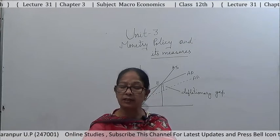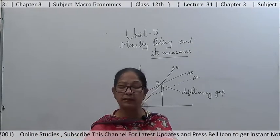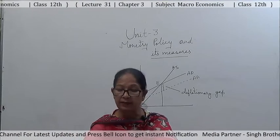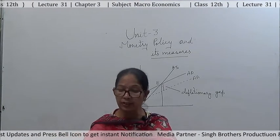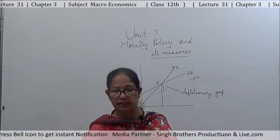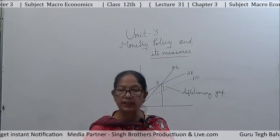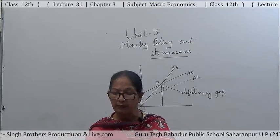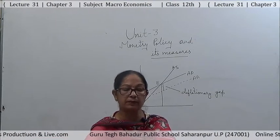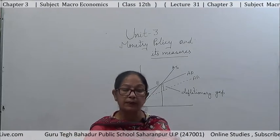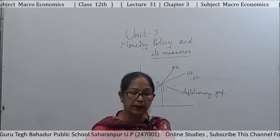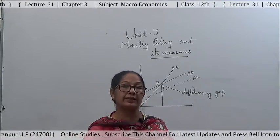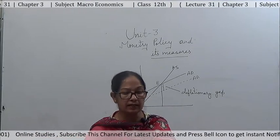What can be the measures? First, fiscal policy: under expenditure policy, the government will increase expenditure; under revenue policy, the government will reduce tax rate; government borrowing will be discouraged; and deficit financing will be encouraged — additional currency will be issued so that people's purchasing power increases and demand level becomes high. For monetary policy, under quantitative measures: repo rate will be reduced, and under open market operations, RBI will buy securities so money flows back to commercial banks and their lending power will increase.